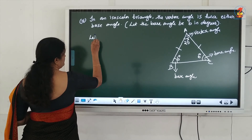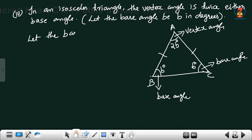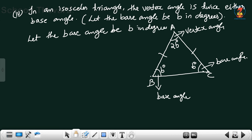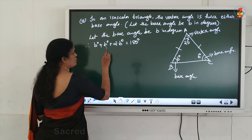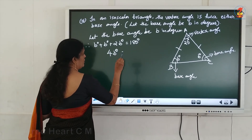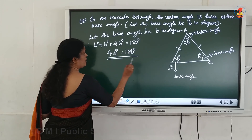Let the base angle be B degrees. Therefore B + B + 2B = 4B = 180 degrees, using the angle sum property that the sum of three angles of a triangle equals 180 degrees. This is the required equation.